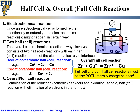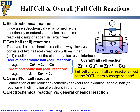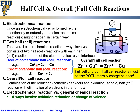Now we have the full-cell reaction and the two half-cell reactions for this electrochemical cell — in this case, a zinc-copper battery. You may ask: what is the difference between an electrochemical reaction versus a general chemical reaction? It always involves oxidation and reduction, or change of valence. For the cathodic half-cell, copper 2+ combines with electrons to become copper metal — the valence of copper changes. For the anodic half-cell, zinc metal gives out electrons and becomes zinc ion — that is also a change of valence. So electrochemical reactions always involve change of valence.